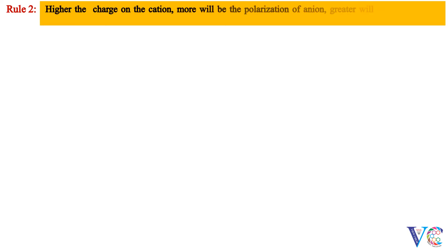Rule 2: higher the charge on the cation, more will be the polarization of anion. Greater will be the covalent character of that ionic bond.